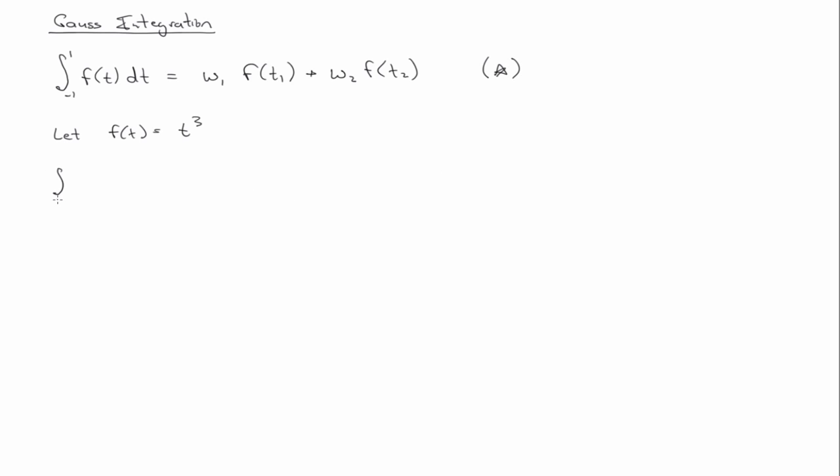So, we have the integral minus 1 to 1, t cubed dt. If we evaluate the integral, that's one-fourth t to the fourth evaluated at minus 1 and 1, or that's equal to one-fourth minus one-fourth, which is equal to zero, and that's equal to w1 t1 cubed plus w2 t2 cubed.